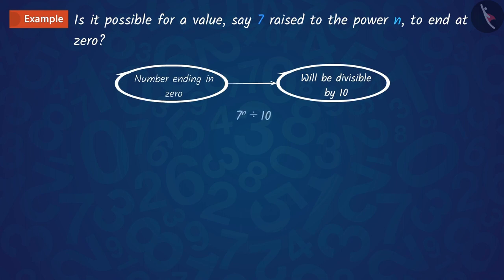So, we can say that if the number 7 raised to the power n ends with the digit 0, then it will be divisible by 10. This means that 7 raised to n should have 2 and 5 among its prime factors.